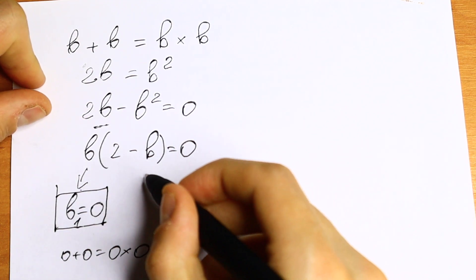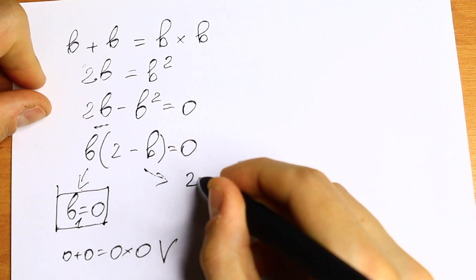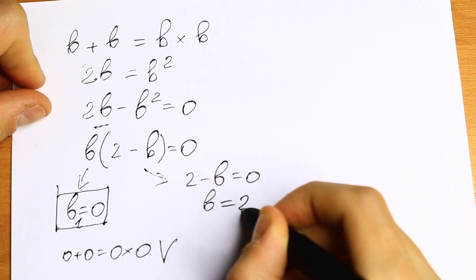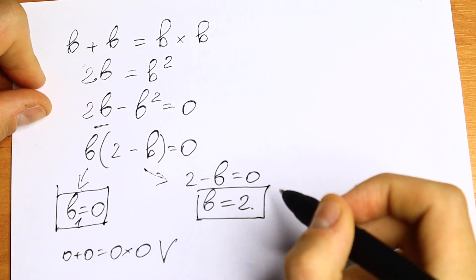And for the second root, we have 2 minus b equals zero. And if we solve this, we can find that b equals 2. This is our second root.